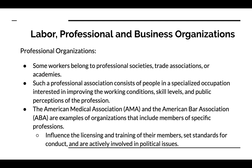Next, we're going to look at professional associations. Some workers belong to professional societies, trade associations, or academies. A professional association consists of people in a specialized occupation interested in improving the working conditions, skill levels, and public perceptions of the profession. The AMA, or American Medical Association, and the ABA, or American Bar Association, are good examples. These groups influence the licensing and training of their members, set standards for conduct, and are actively involved in political issues related to their particular field. Other professional associations represent bankers, teachers, college professionals, police officers, and hundreds of other professions.